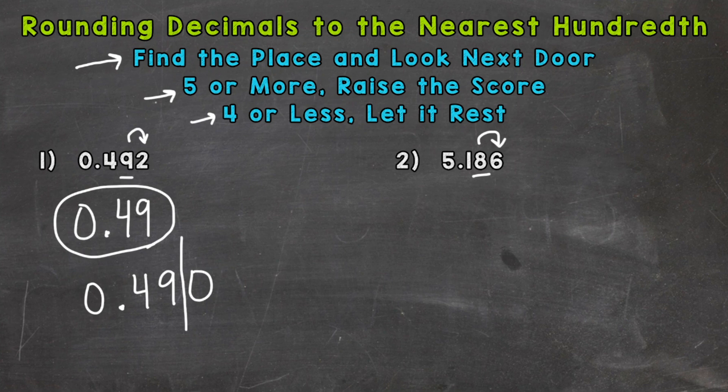Is that six five or more and we raise the score? Or is it four or less and we let it rest? Well six is five or more so we need to round up. This decimal is closer to or rounds to 5.19.